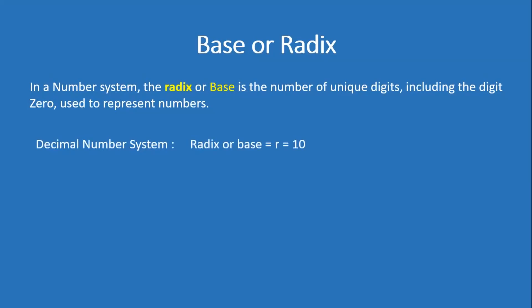So for the decimal number system, the base or radix — if we denote base or radix as R — then the base or radix of the decimal number system is 10, and the digits are 0, 1, 2 up to 9. So if the base is R, then the digits starting from 0 go up to R minus 1.